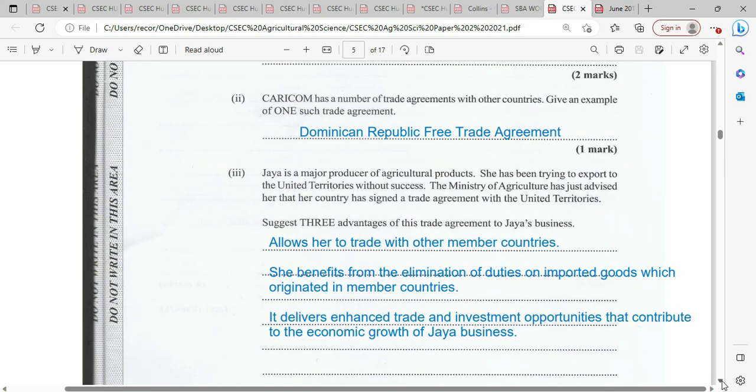Two marks. Caricom has a number of trade agreements with other countries. Give an example of one such trade agreement - the Dominican Republic Green Trade Agreement, for one mark.